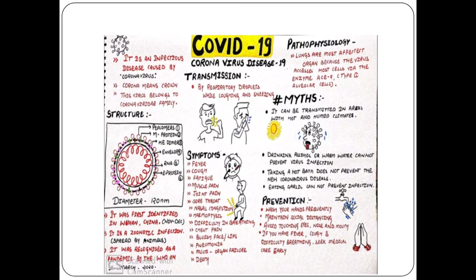Transmission of coronavirus occurs via respiratory droplets during coughing and sneezing — droplets released into the environment transmit the virus from one person to another. Symptoms include fever, cough, fatigue, muscle pain, joint pain, sore throat, nasal congestion, difficulty in breathing, chest pain, pneumonia, organ failure, and in severe cases, death.